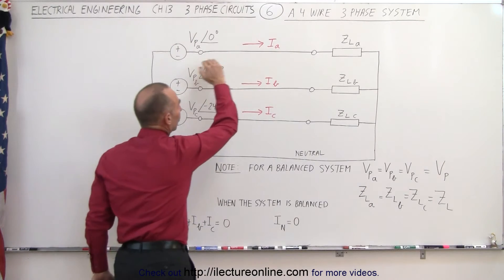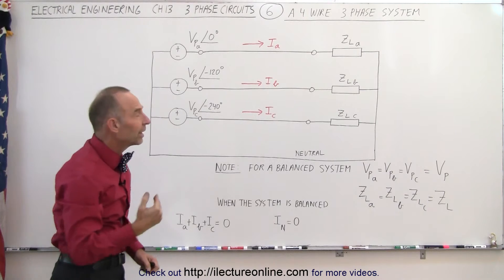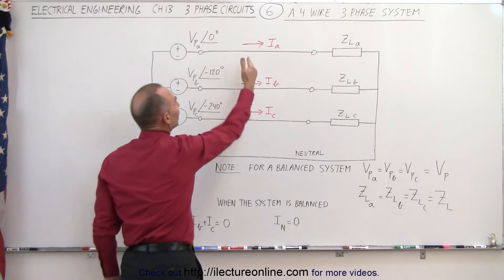This means that the current going through each of the loads on each of the three wires, providing the voltage, will also be 120 degrees out of phase.